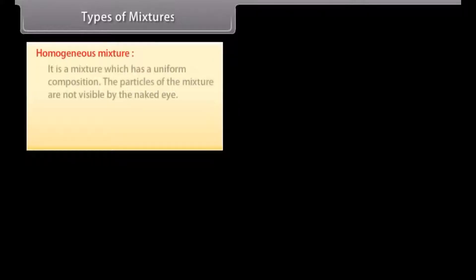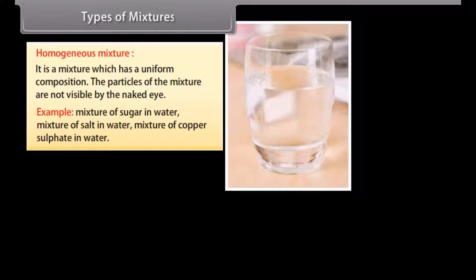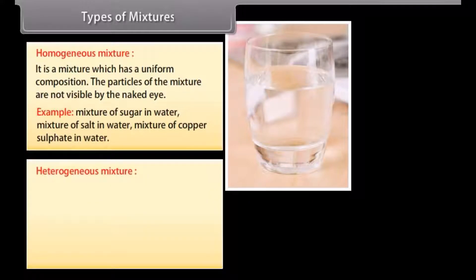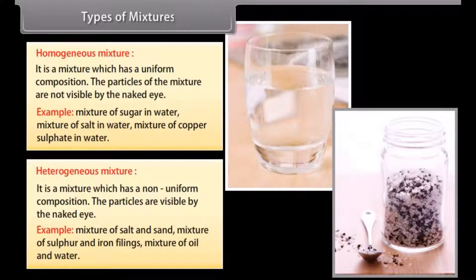Types of mixtures. A homogeneous mixture is a mixture which has a uniform composition; the particles of the mixture are not visible by the naked eye. Example: mixture of copper sulfate in water. A heterogeneous mixture is a mixture which has a non-uniform composition and the particles are visible by the naked eye. Examples include mixture of salt and sand, mixture of sulfur and iron filings, and mixture of oil and water.